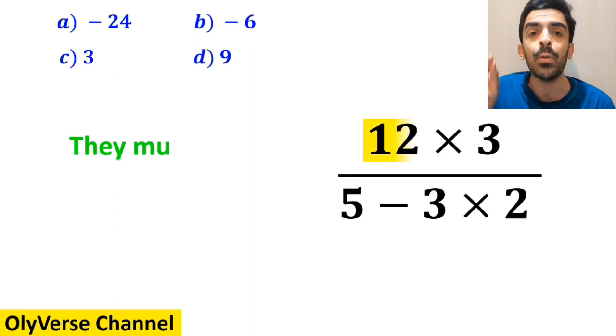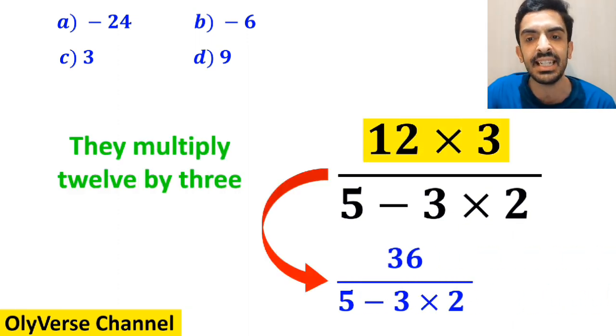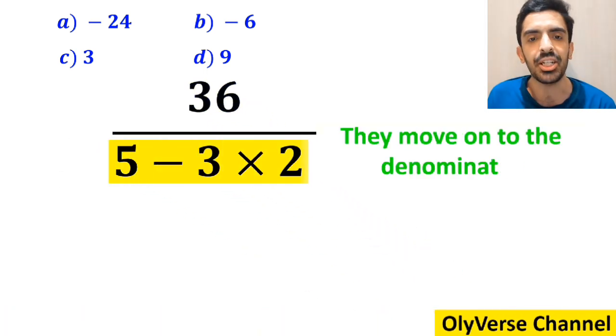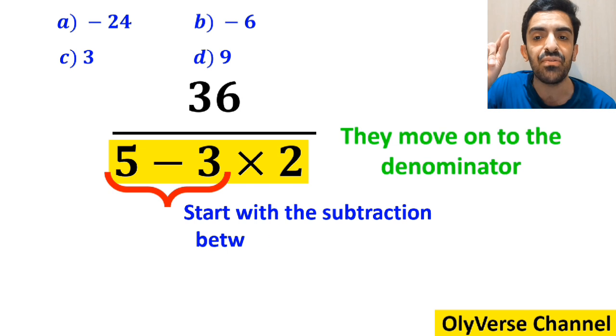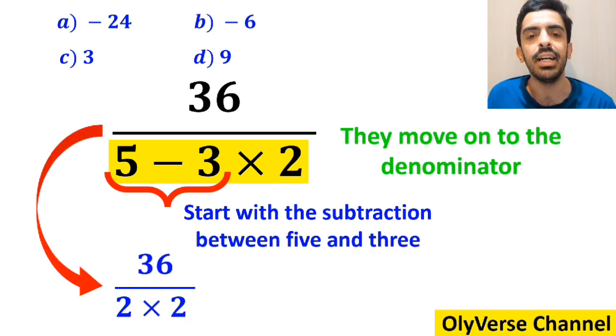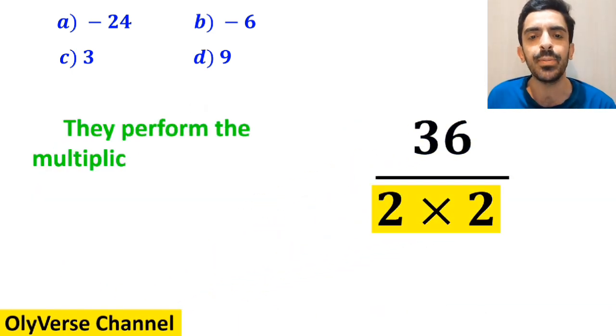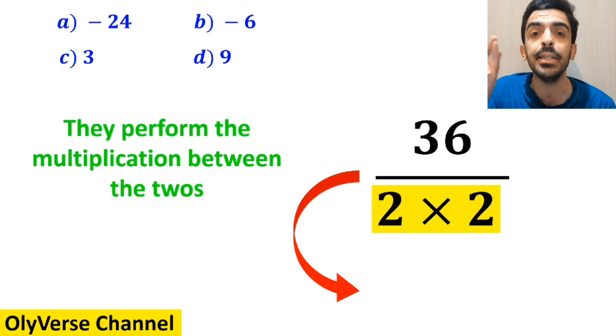And the next step, they multiply 12 by 3 and simplify this fraction to 36 over 5 minus 3 times 2. Then, they move on to the denominator and start with the subtraction between 5 and 3. So, instead of this expression, they rewrite it as 36 over 2 times 2. And the final step, they perform the multiplication between the 2's and simplify this expression to 36 over 4, which finally gives them the answer 9.